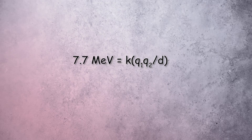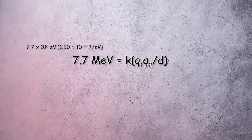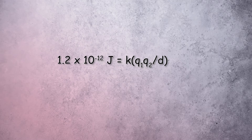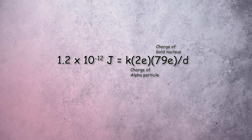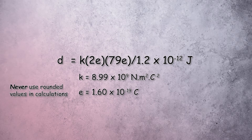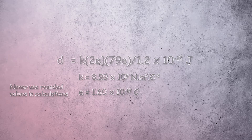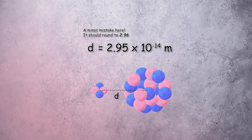At the time, Rutherford was using alpha particles with kinetic energies of 7.7 mega-electron volts, which is approximately 1.2 times 10 to the minus 12 joules. Rearranging the equation to make d the subject, we end up with a separation distance of about 2.95 times 10 to the minus 14 metres.